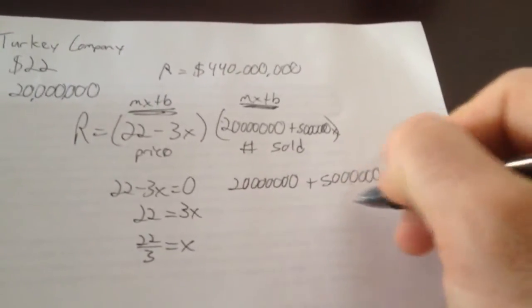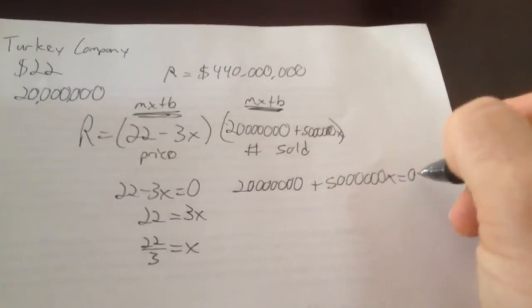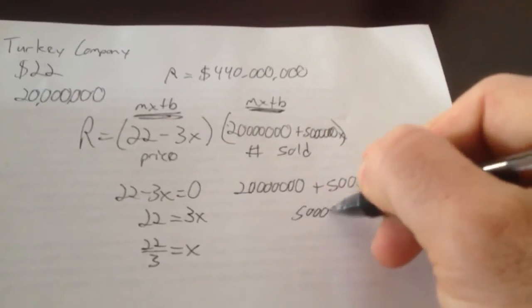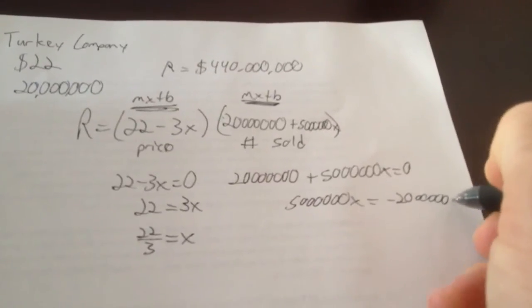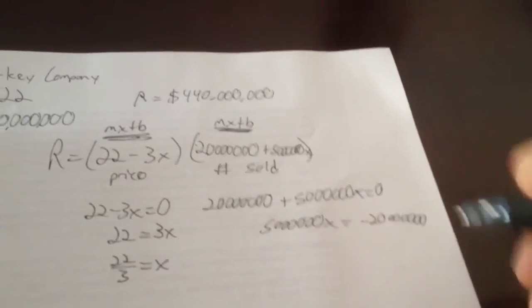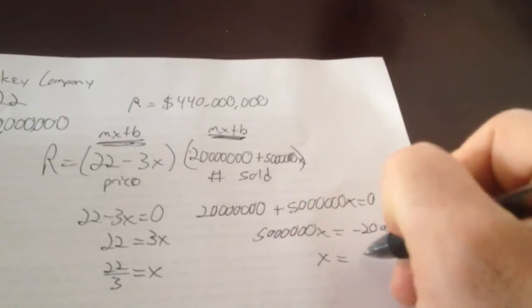Then you take this over here, this 20 million. Again, if you subtract the 20 million over to the other side, you're going to have 5 million X equals negative 20 million. And when you divide by 5 million on both sides, you get negative 4.